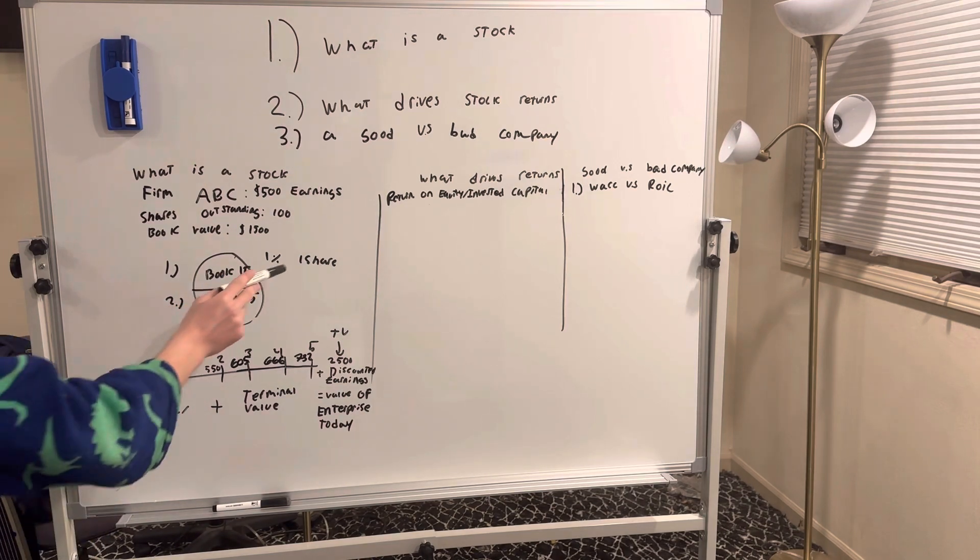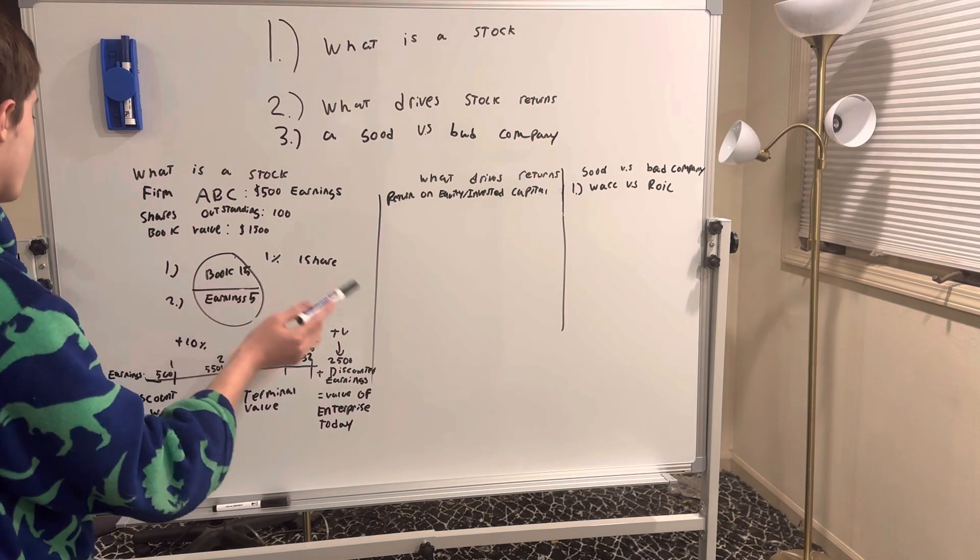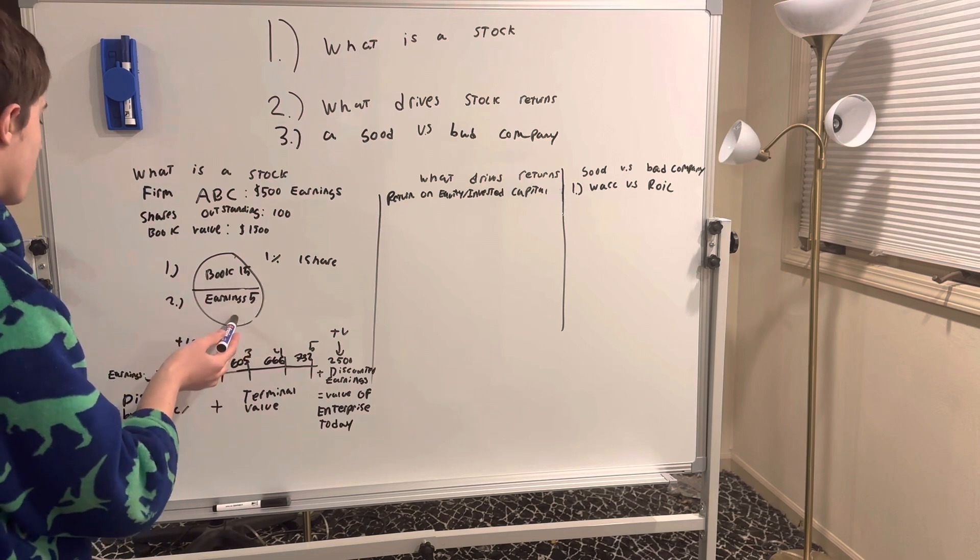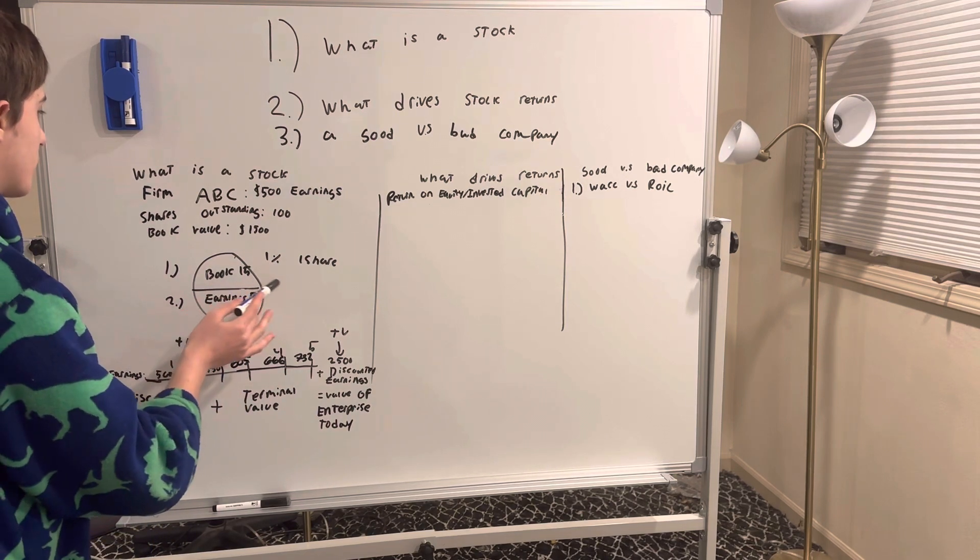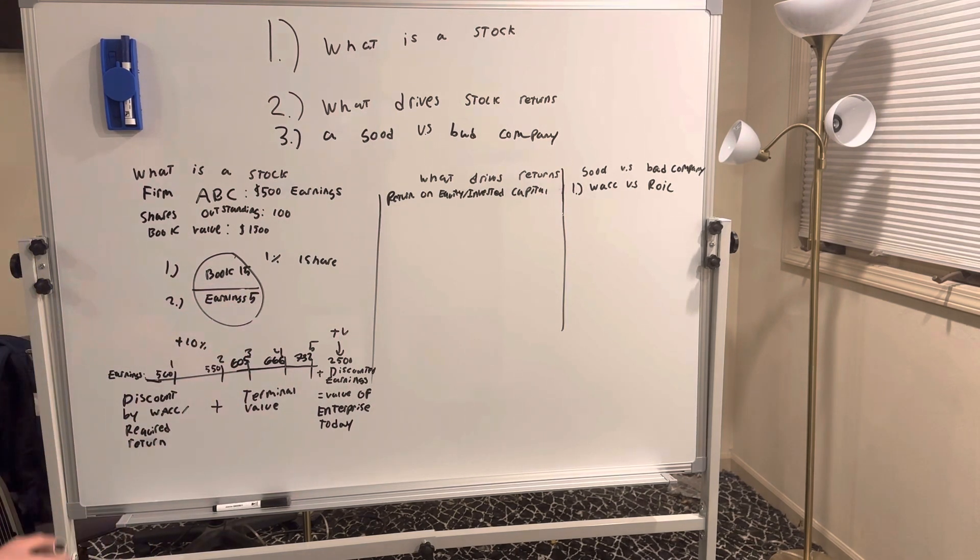If we were to buy one share, we'd own 1% of the firm's book value and 1% of the firm's earnings, which equates to $15 for book, $5 a year for this year's earnings.